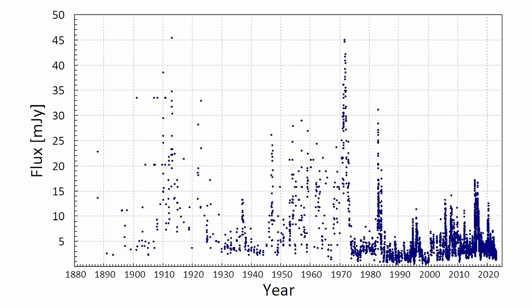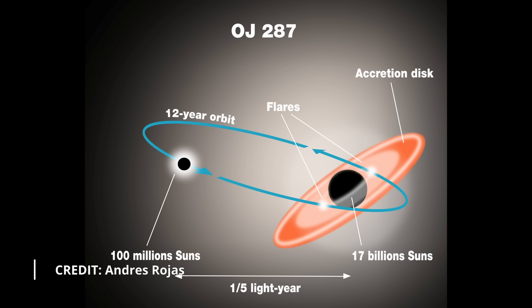Subsequent observations across the electromagnetic spectrum revealed its peculiar double peak optical outbursts, which appeared to occur regularly. In the late 1980s and early 1990s these unique light curves led to the speculation that OJ-287 was a binary black hole system.